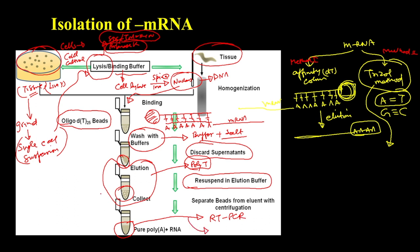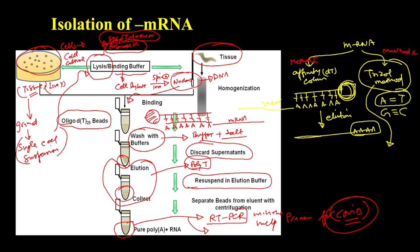This is exactly what was done in COVID testing. They took saliva and other samples, did this process to isolate RNA, and then performed RT-PCR with primers for COVID. If there was amplification of the cDNA, they said it was COVID positive. We will discuss RT-PCR and reverse transcriptase in detail when we cover real-time PCR applications.